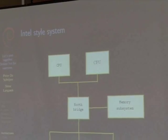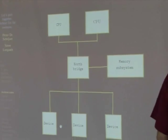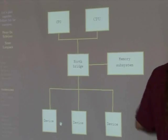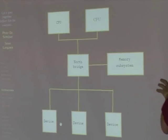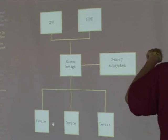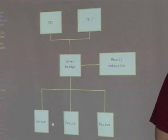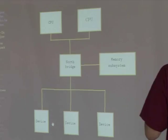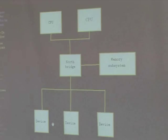Starting with the classical Intel system: there is a CPU complex of one or more CPUs sharing a bus to the North Bridge. The North Bridge has an interface to the memory subsystem — SDRAM, DDR2, DDR3 — and also connects to PCI and AGP. PCI is one of the most important expansion buses, though it is being replaced by PCI Express. AGP was invented for graphics cards to provide more bandwidth by adding prefetching to reduce transaction latency.